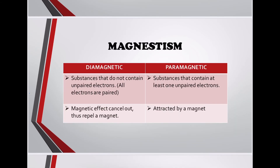Magnetism: for diamagnetic substances, there are no unpaired electrons — all electrons are paired and the magnetic effects cancel out, so the substance repels a magnet. For paramagnetic substances, there is at least one unpaired electron, and the substance is attracted by a magnet.